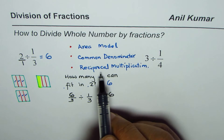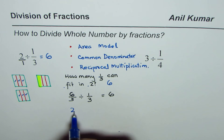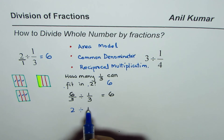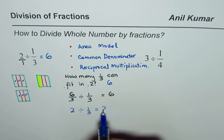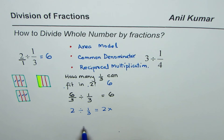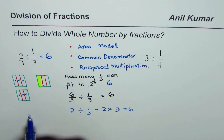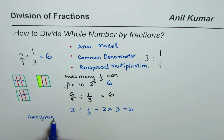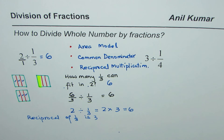Now let me show the third strategy: reciprocal multiplication. We have 2 divided by 1/3. The reciprocal of 1/3 is 3, so we can write this as 2 times 3, which equals 6. We have now used all three strategies to find the solution to the division of fractions.